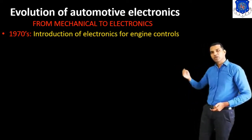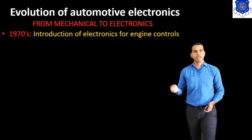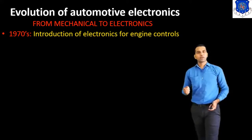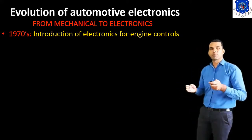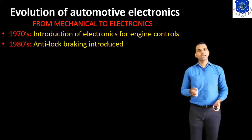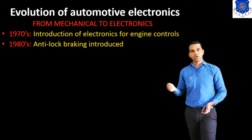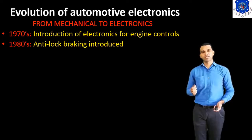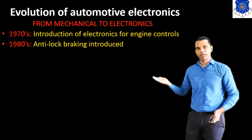In the 1970s, there was the introduction of electronics for engine control. In 1978, General Motors used the electronic system in the car for the first time. Then, in 1980, the Anti-lock Braking System — ABS — was introduced.